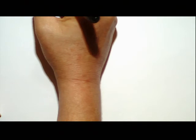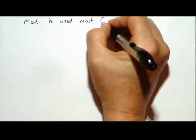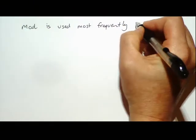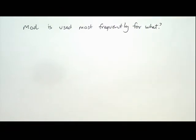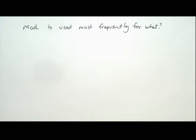Let's look at some numbers. Before we go further, what do we use mod for most frequently? To tell if things are odd or even. To move through an array row by row. To see if a division is even. Telling time — yes, people use mod all the time to figure out what time it will be after a certain number of minutes.